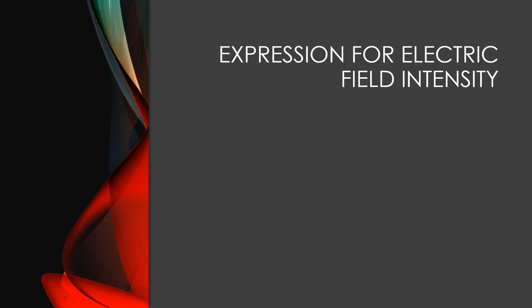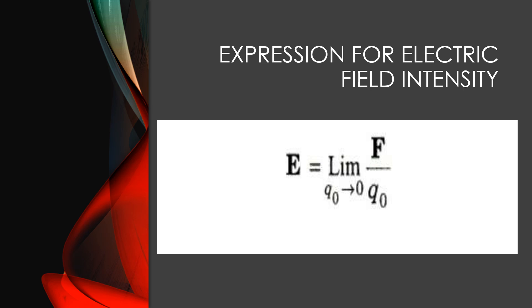We all learned about the electric field intensity and have seen its expression. Electric field intensity is the force experienced by a unit positive charge placed at any point in the electric field created by the source charge. Now there is a change in the expression — here q-naught represents the test charge. In the previous lecture we took the test charge as q; now I am showing the test charge by taking it as q-naught. There is no mandatory rule to take the test charge as q — we can just specify which one we are going to take as the test charge.